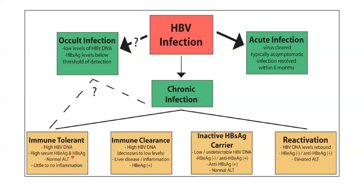From the immunotolerant phase, the patient enters the immune clearance phase, where the aim is to reduce DNA and E antigen levels. DNA and EAG levels start reducing and ALT/AST levels start increasing because of inflammation. The key principle of treatment is: whenever there is inflammation, we treat; whenever there is no inflammation, we don't treat.